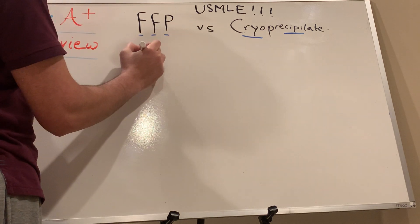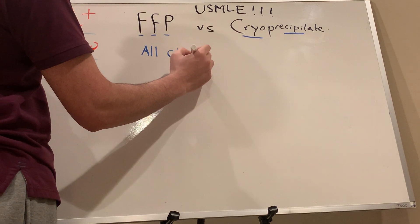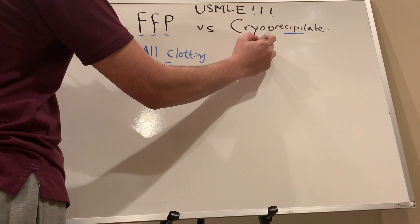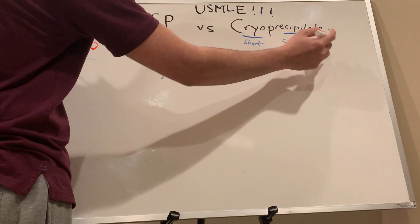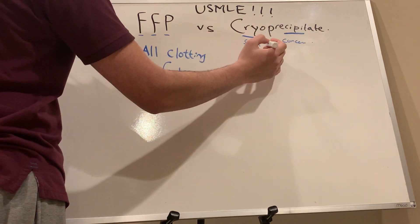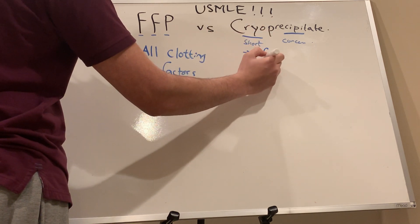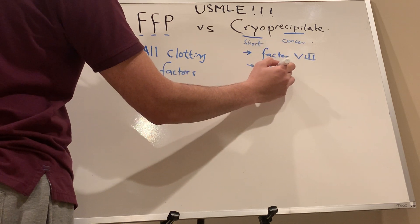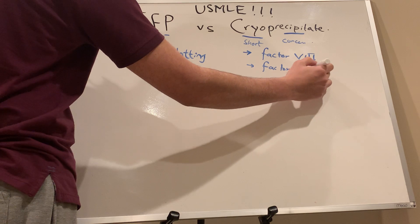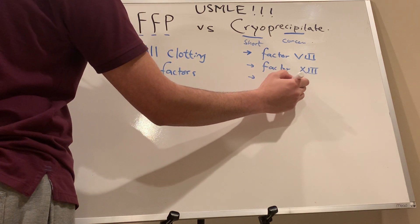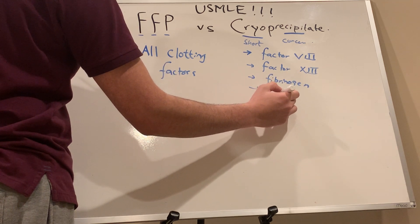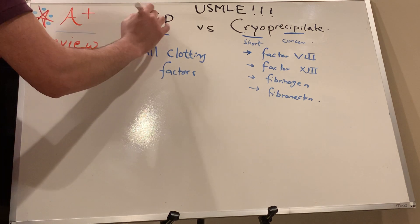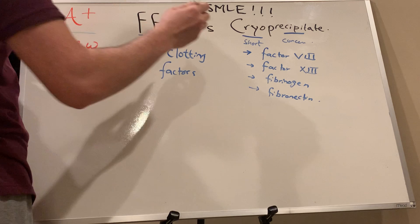Fresh frozen plasma contains all clotting factors. Cryoprecipitate — 'cryo' meaning cold — is a concentrated form of the insoluble precipitate. Cryoprecipitate contains the most important things we need to know: factor 8 and clotting factor 13.